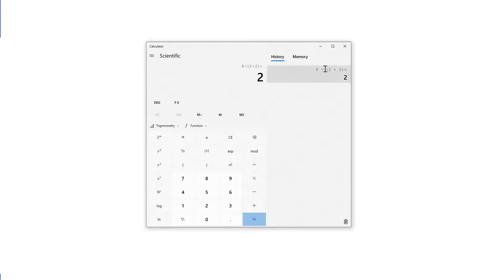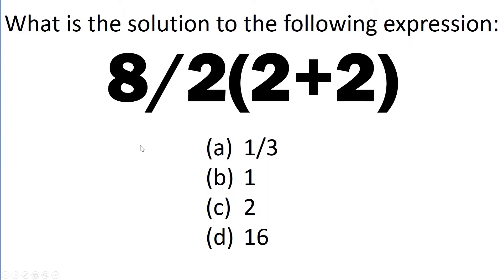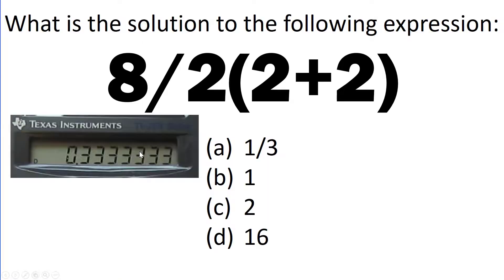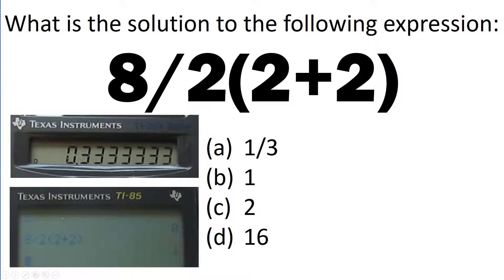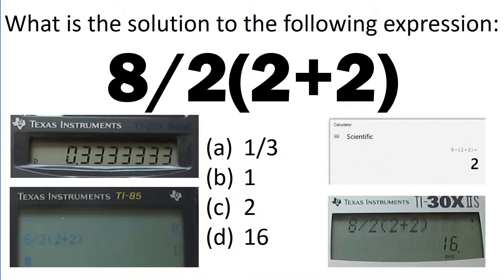and what do we get? We have our 0.33, we have our one, we have our two, and we also have our 16. So which one's right? Well, the reality is they're